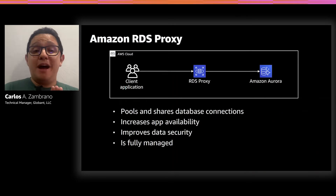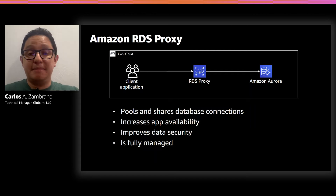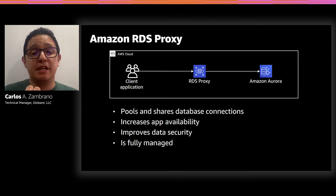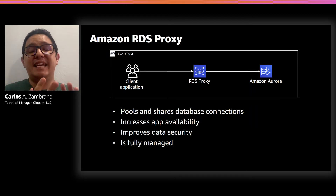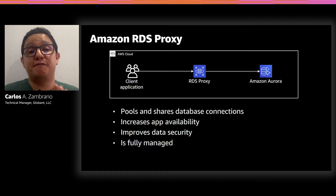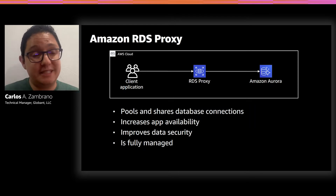Amazon RDS proxy is a highly available, fully managed, and secure proxy that sits between your serverless application and your Amazon RDS database. It has different features: you can pool and share database connections, increase the availability of your application, and improve data security through integration with Secrets Manager and enforcement of TLS to connect to the database. It is a fully managed service.